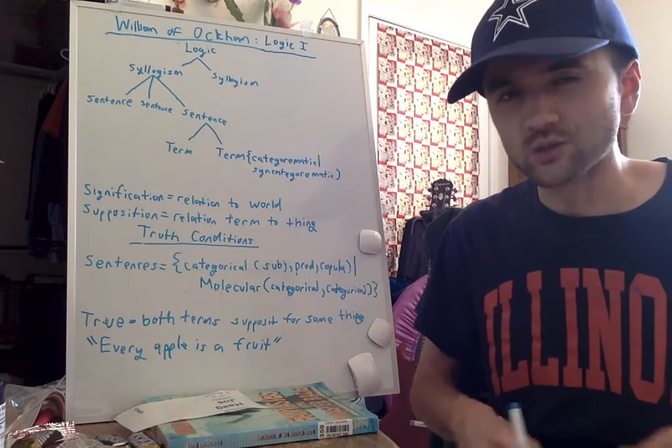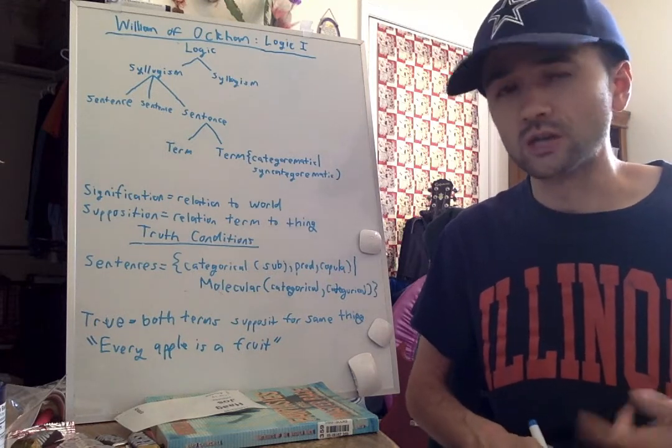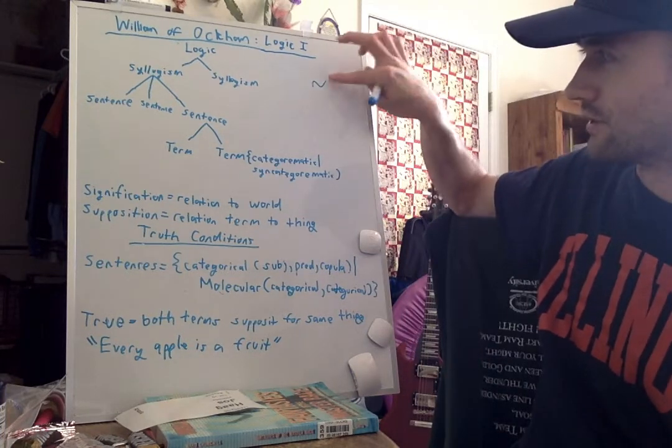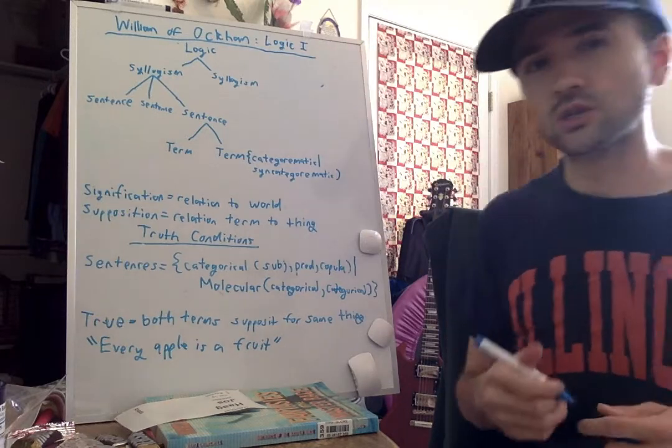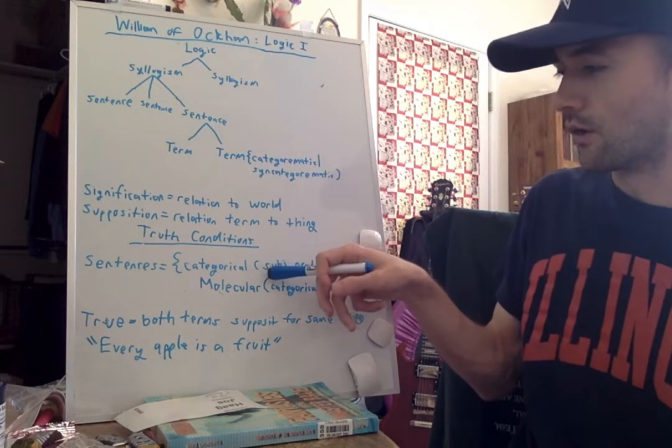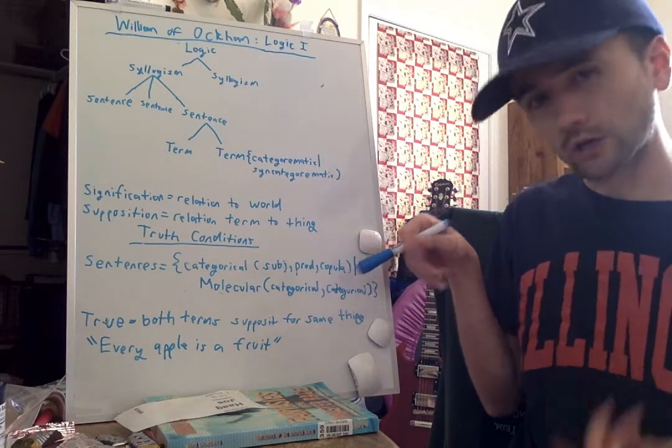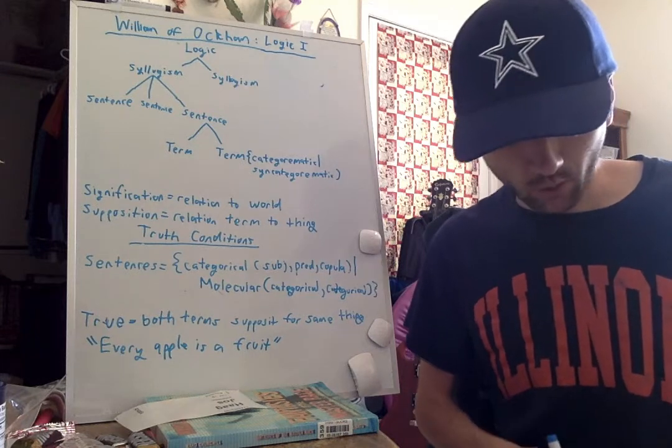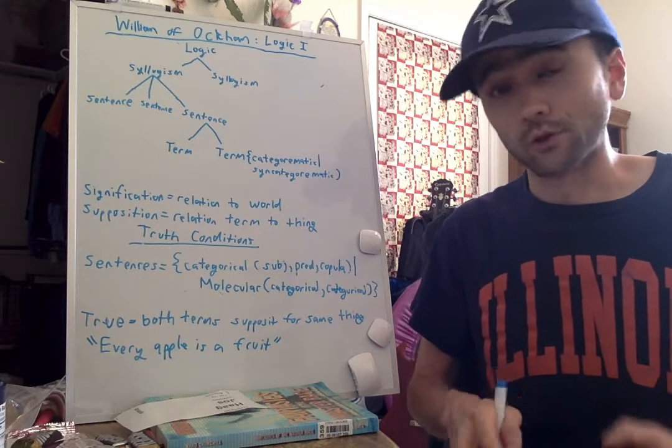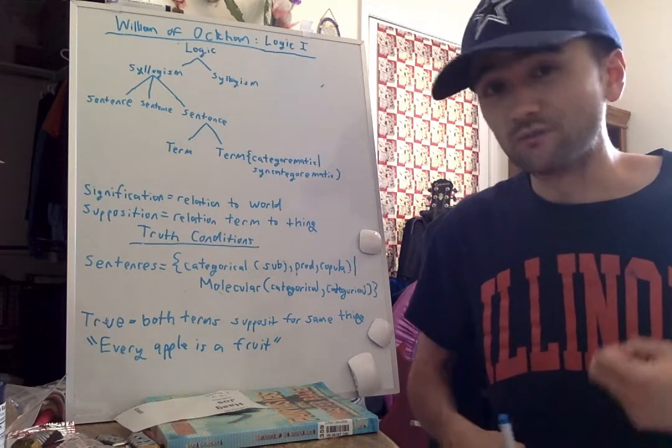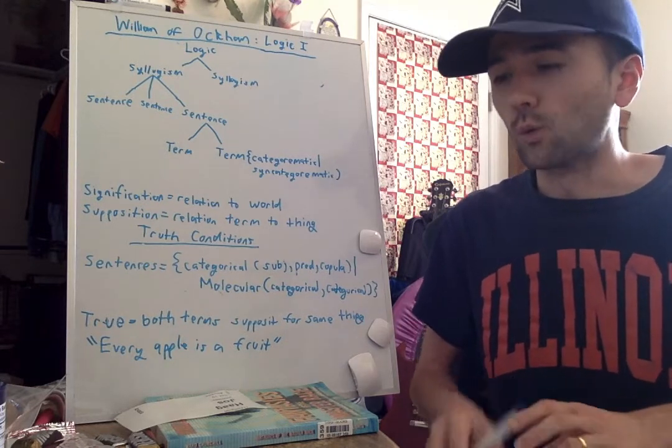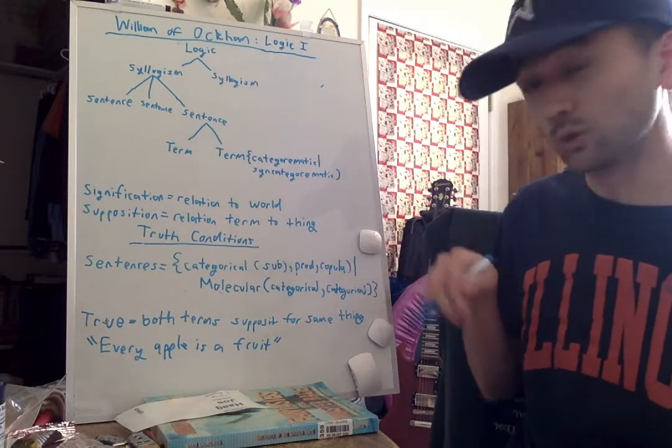How does negation fit into this? Does he consider negation to be a logical operator? Instead, if you look at this formula of a categorical sentence including a copula as one of its components, he argues that a copula can come in two varieties. You have affirmative copulas and negative copulas. He's able to handle negation not as an operator, but as one of the two varieties that the copula comes in.